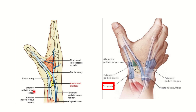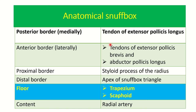In the second picture, we can see the anatomical snuffbox. The anterolateral boundary is formed by extensor pollicis longus, and the posterior medial boundary is formed by extensor pollicis brevis and abductor pollicis longus. We can see the base is formed by the scaphoid bone. This is the anatomical snuffbox in summary.